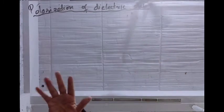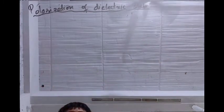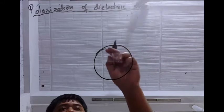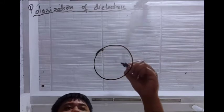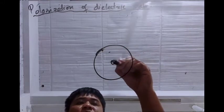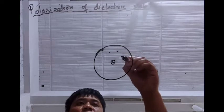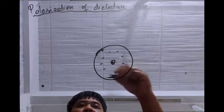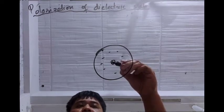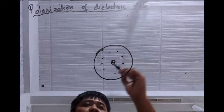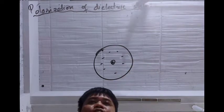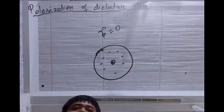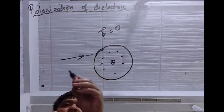let me start with polarization of a non-polar atom. Suppose this is a non-polar atom, in which the center of gravity of negative charges and positive charges coincide. This is the center of gravity of the negative charges and also the center of gravity of the positive charge. So the dipole moment here is zero, so it is non-polar.